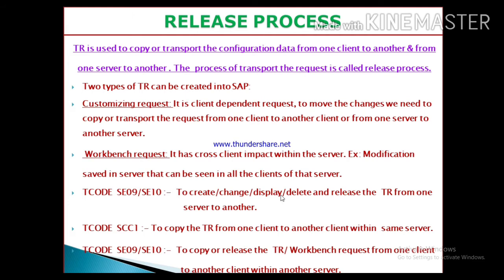There are two types of transport requests. First is the customizing request and second is the workbench request. The customizing request is a client-dependent request — it is used to move changes from one client to another client, or from one server to another server, by copying that transport request.